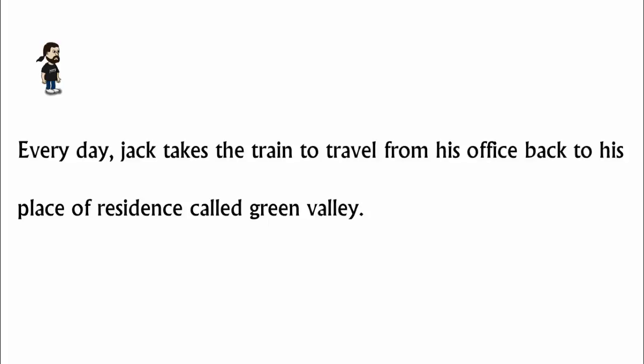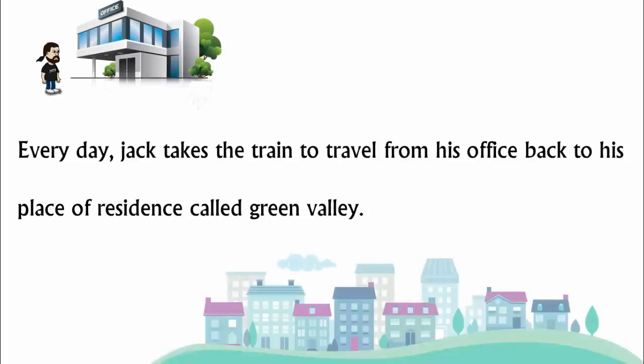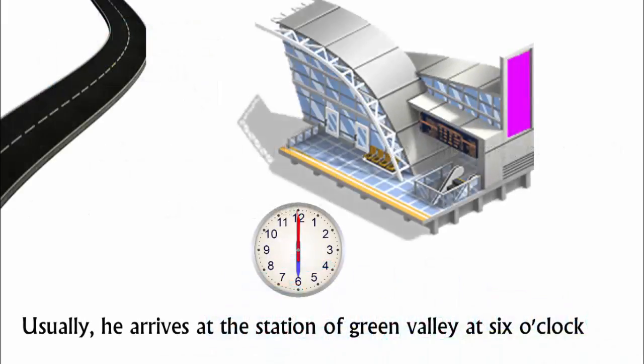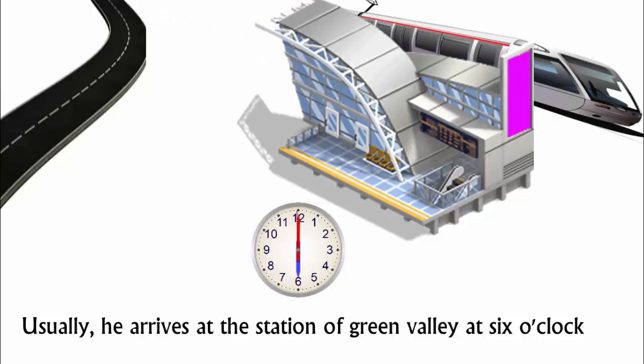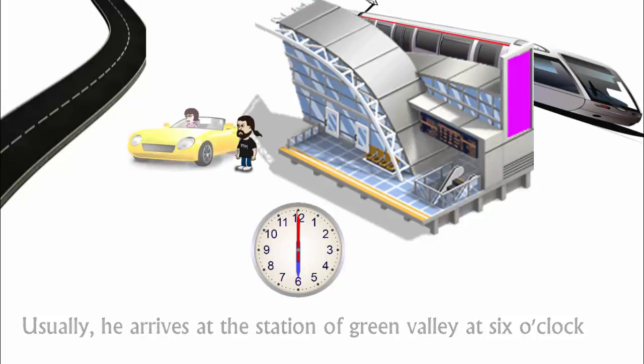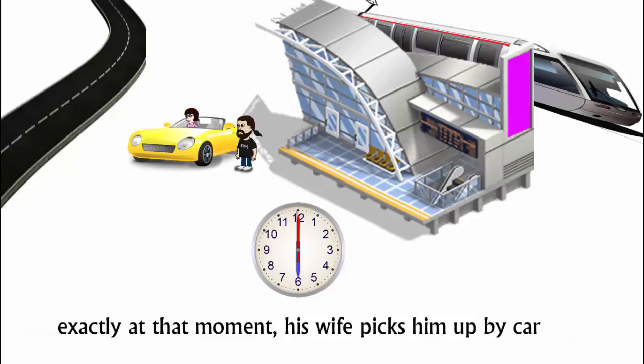Every day, Jack takes a train to travel from his office back to his place of residence called Green Valley. Usually, he arrives at the station of Green Valley at 6 o'clock and exactly at that moment his wife picks him up by car.